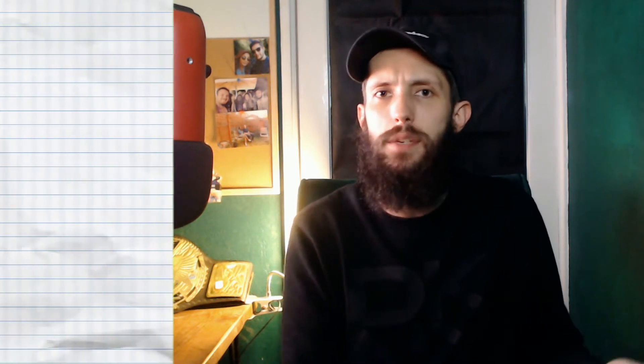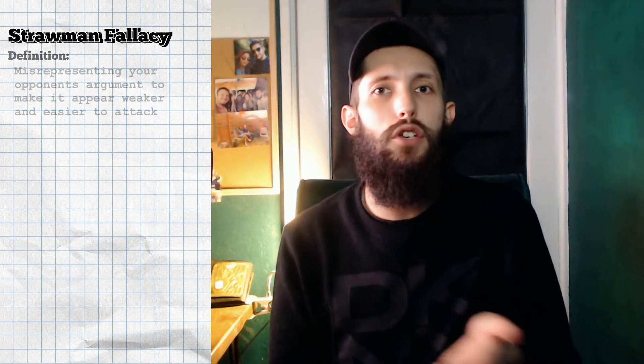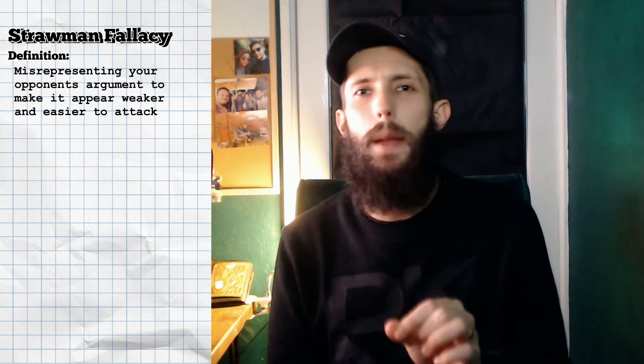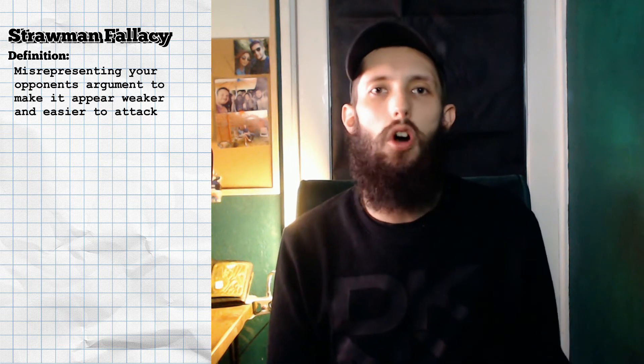A straw man fallacy is one of the more common fallacies that you may come across. Outside of the context of fallacies, a straw man is constructed and placed in a field to represent a person, albeit a person which isn't real. Much like its namesake, a straw man fallacy is where a person constructs your argument and misrepresents it in the process to make your argument appear weaker than it actually is, and thus make it easier to argue against.